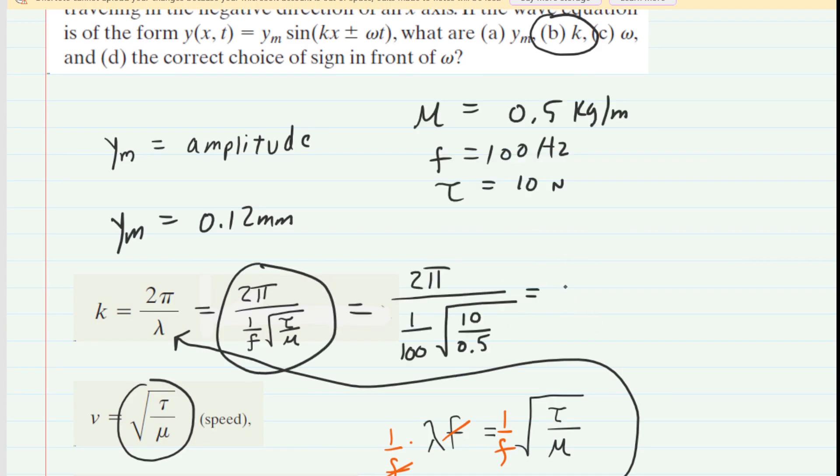And when we carefully insert that into our calculator, we end up with approximately 140. Now, the dimensions of the angular wave number are going to be in radians per meter. So this would be the correct answer to part B of the question.